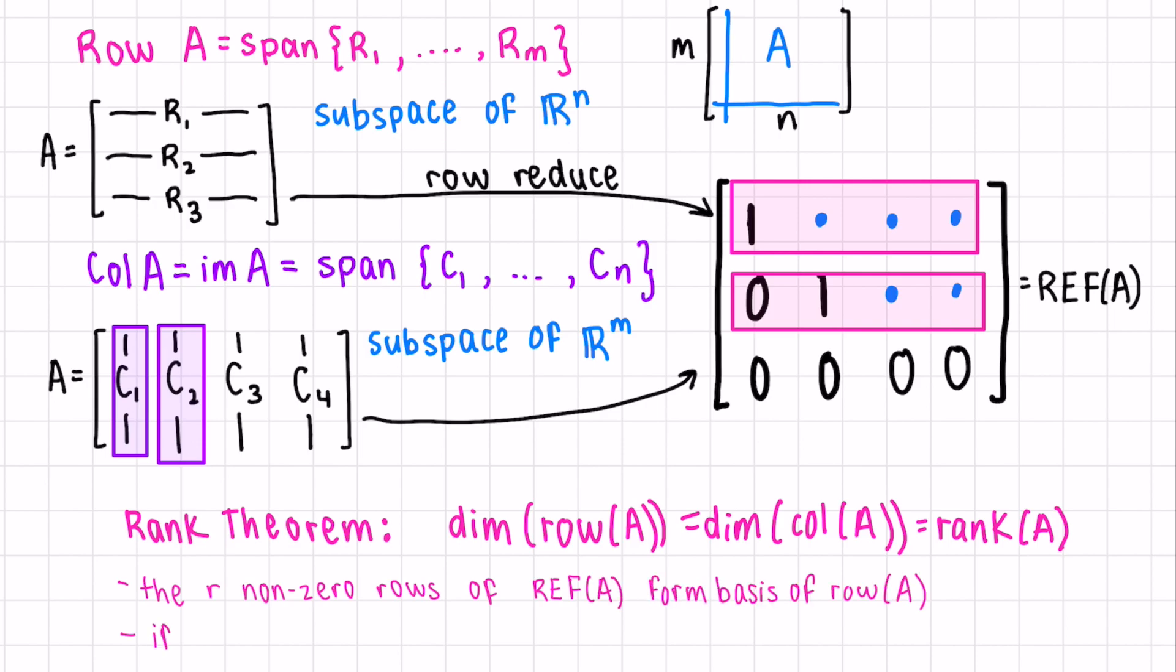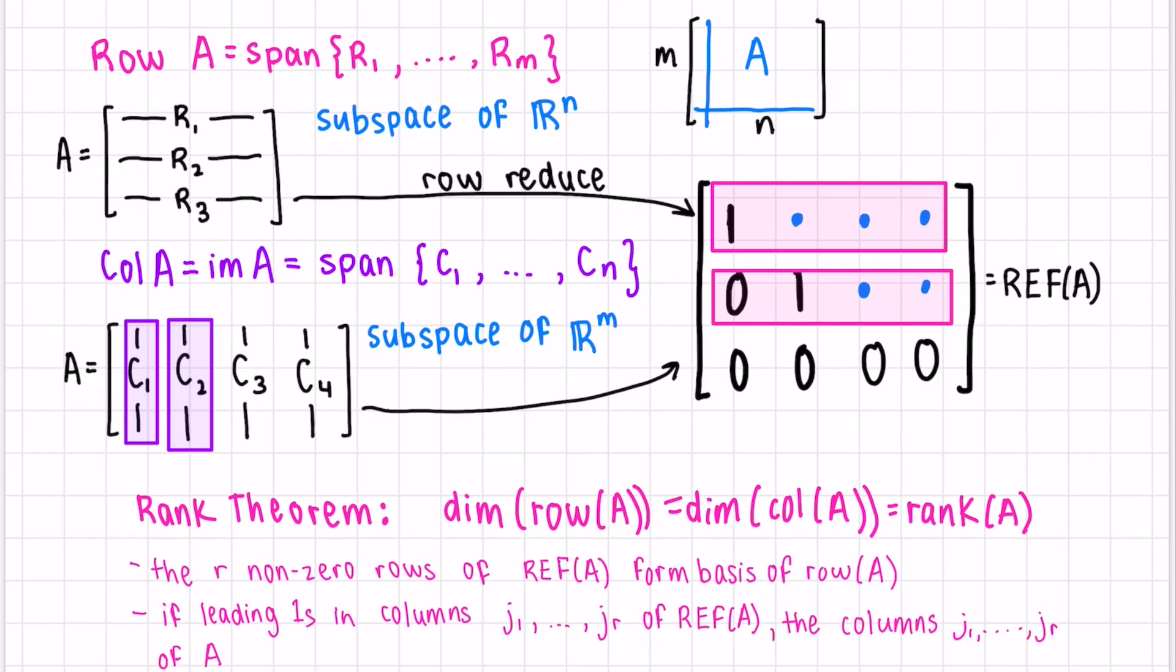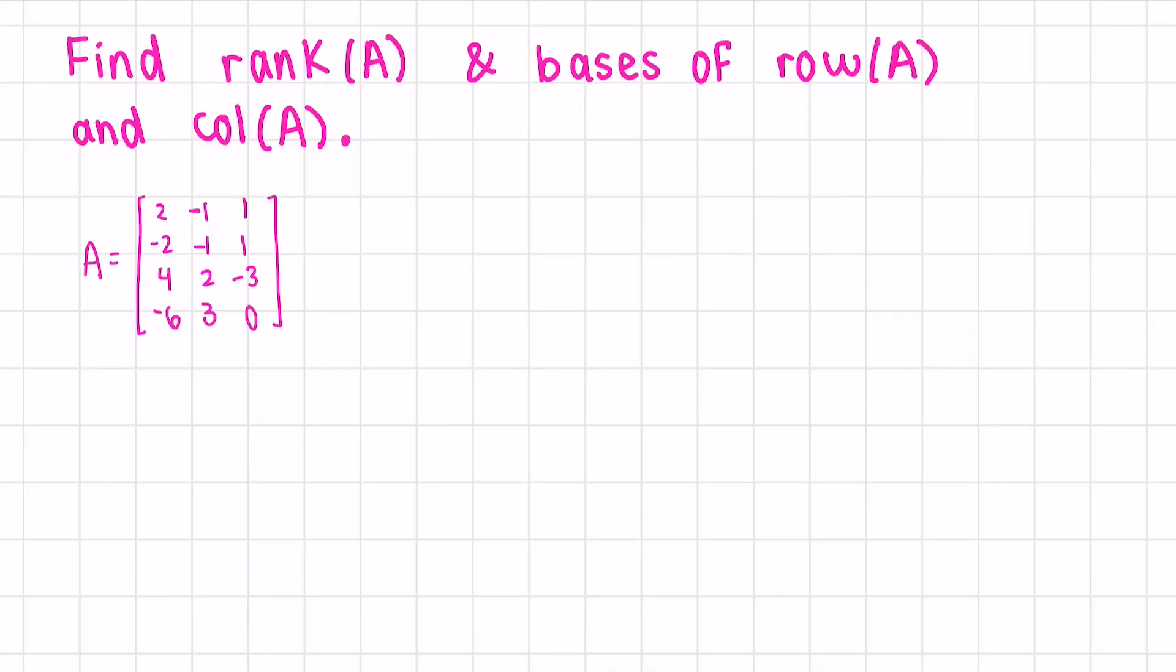And if we have leading ones in columns J1 through to JR of this row echelon form of the matrix, these columns of our original matrix form a basis of column A. Let's find the rank of this matrix, as well as the basis of the row space and the column space.